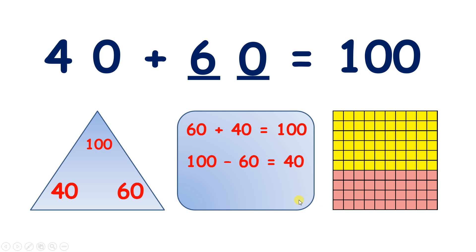And we know that 100 minus 40 is 60, so if we subtract the 40 pink squares, we'll be left with the 60 yellow squares.